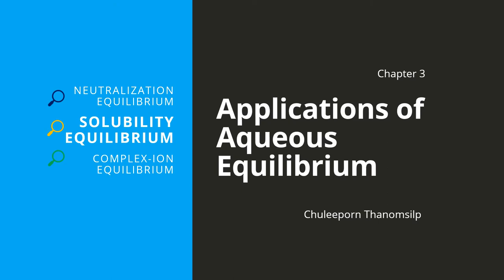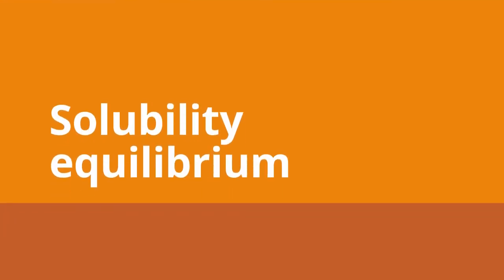Sawaddee ka. We are moving on to the second part of chapter 3. This is going to be about solubility equilibrium. The solubility equilibrium, as suggested by the name, is looking at the equilibrium in the solution — specifically about the dissolution of ionic compounds. We are going to see the equilibrium between the solid and their ions.